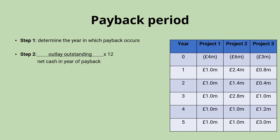We can see how these steps work out in practice by calculating the payback period for each of our three projects. Project one is going to be really simple: we've got a four million pound investment cost and returns of one million pounds each year, so we can clearly see it's going to take four years to repay that initial investment. We only need step one here — we don't need the formula for step two because payback falls nicely at the end of the fourth year.